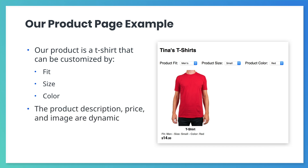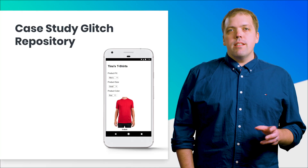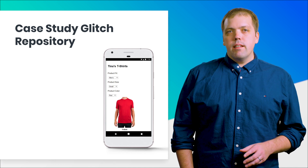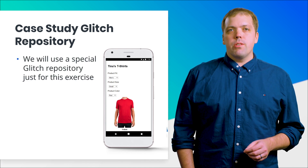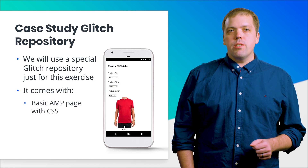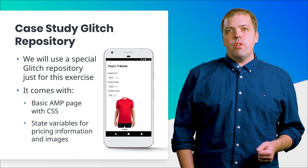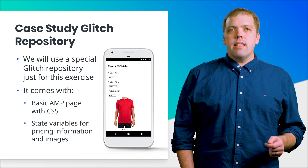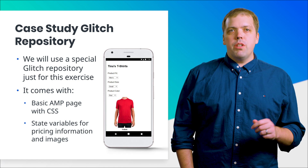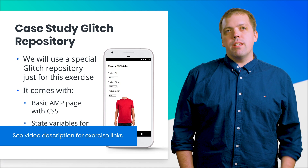On our product page, the product description and price will change based on the user's selections. Also, the shirt's image will change when the user selects a color. Remember, we're not going to build this product page inside Chico's Cheese Bikes — this is a separate site. We'll use a special Glitch repository for this exercise. This Glitch repository contains basic CSS and HTML to lay out the product page, state variables describing the cost of the product, upcharges for various options, and URLs for the various product images. It also contains an AMP state component to hold state variables with initial values. You'll find the link to this repository in the video description — remember to remix it so that you can edit it.